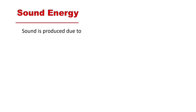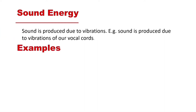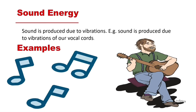Now we will study sound energy. Sound is produced due to vibrations — whenever an object vibrates, it produces sound. For example, when our vocal cords vibrate, sound is produced. Similarly, when a guitar string is plucked, it vibrates and produces sound, and when a drum is struck, sound is produced. When you knock on a door, you also produce sound energy. Examples include music and a person playing guitar.